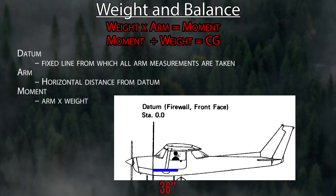Moment is a downward force in the airplane. You take the length of the arm, or the distance from the datum, you multiply it by the weight, and you have your moment. Usually the units are inch-pounds.